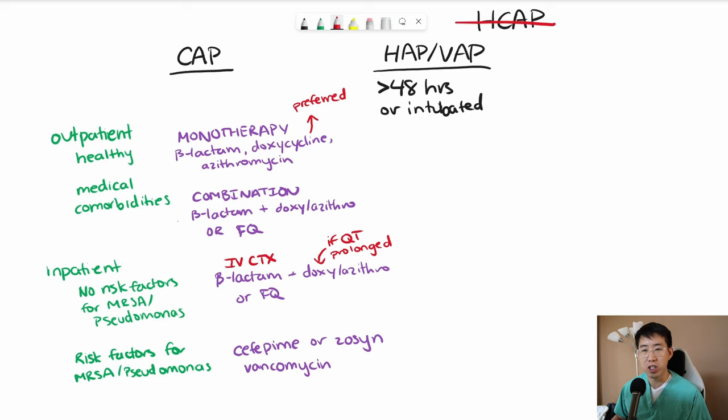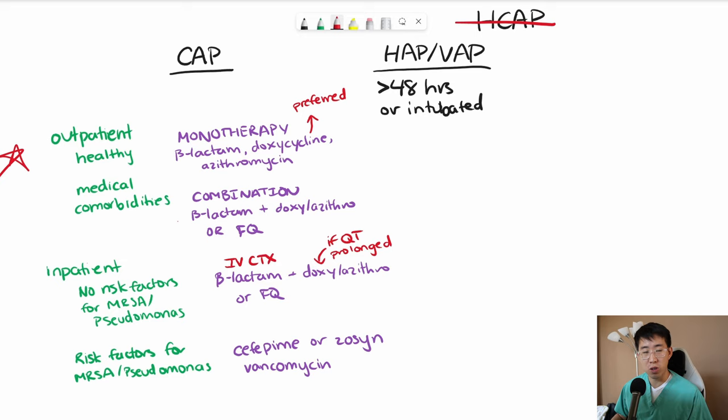So I really want to emphasize just nailing this down. Outpatient, healthy people, just one drug: either beta-lactam, doxy, or azithromycin. Medical comorbidities, let's do combination therapy. And then inpatient, we're going to do IV ceftriaxone and azithromycin. And then with risk factors for MRSA and Pseudomonas, we'll do something like cefepime or Zosyn instead.